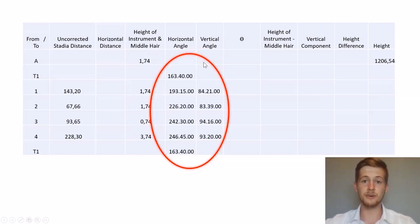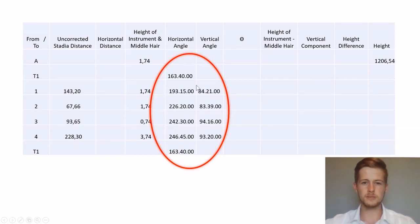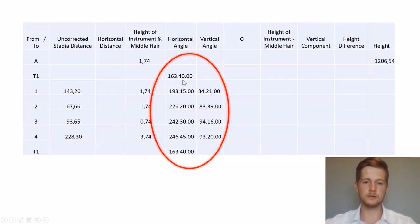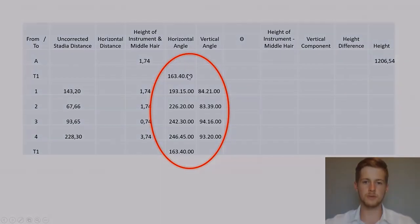Then we'll fill in our horizontal and vertical angles read through the theodolite. We have all our heights and all our points — the horizontal angle as well as our vertical angles — and we also have our angle for our benchmark from our station.